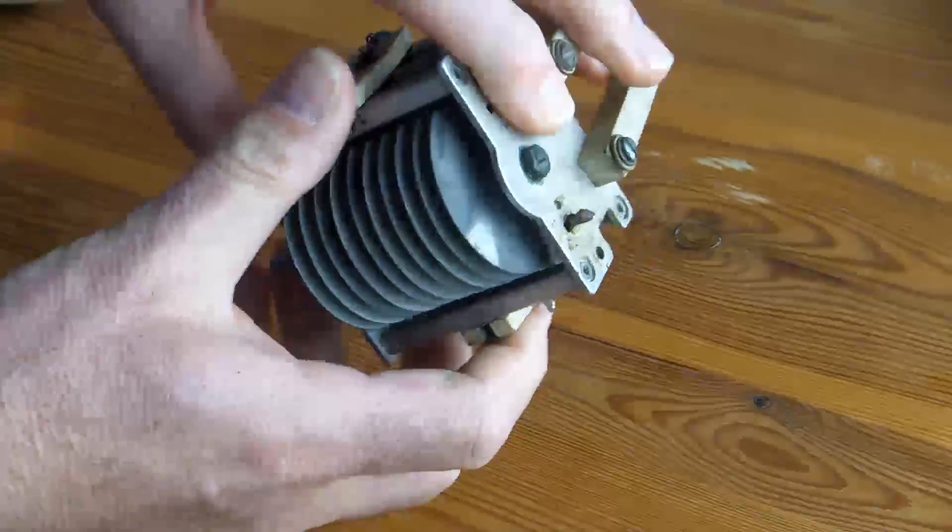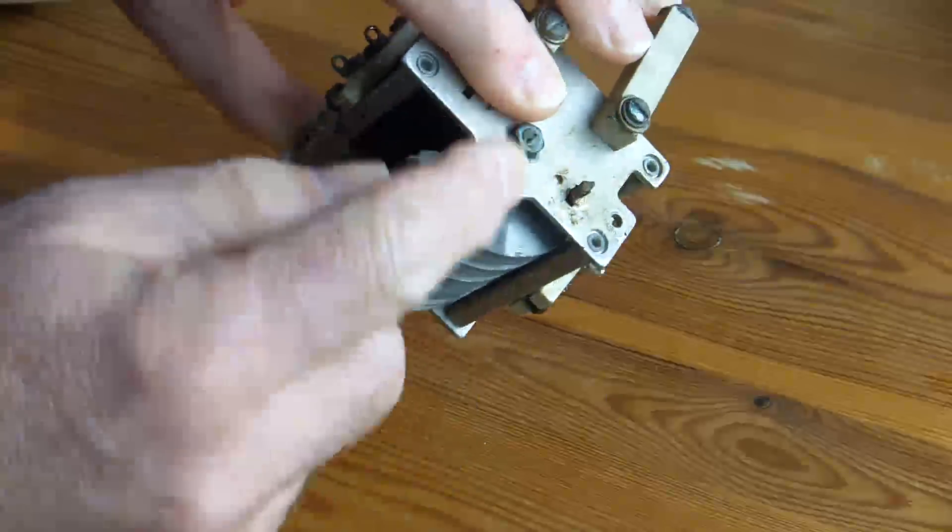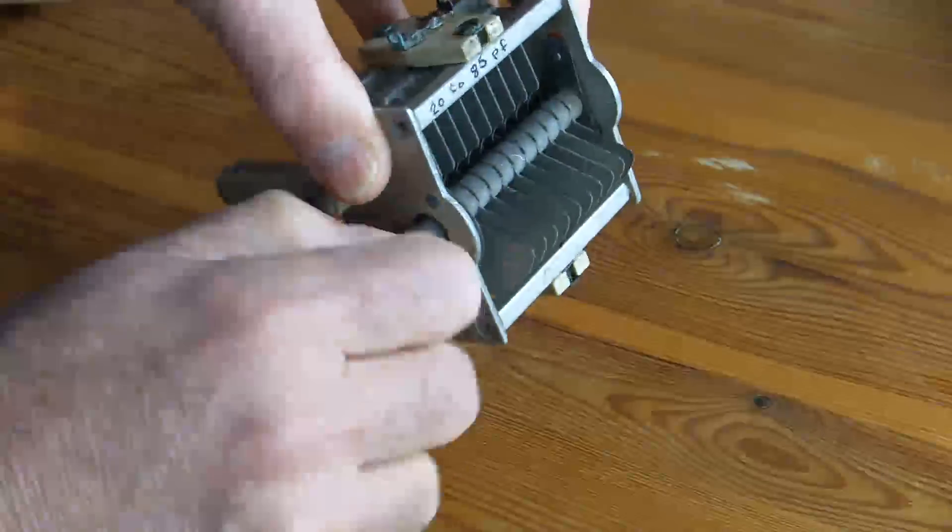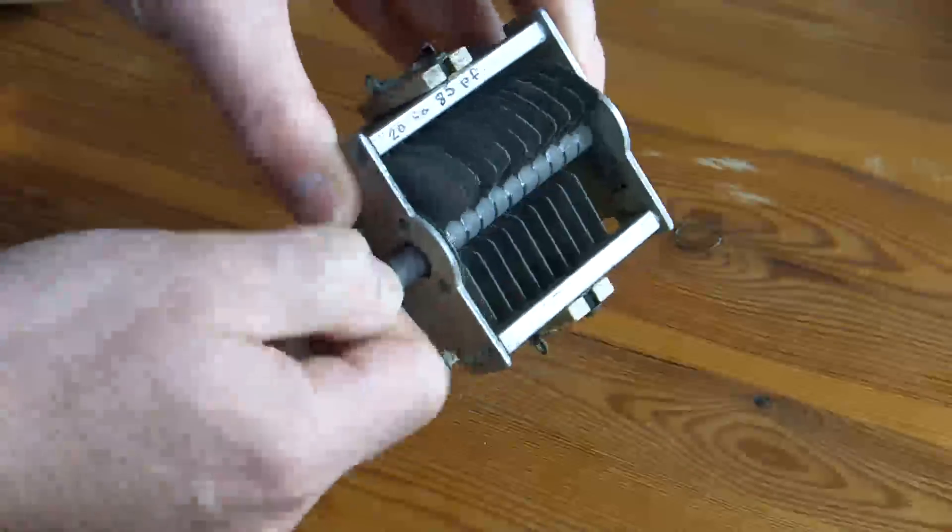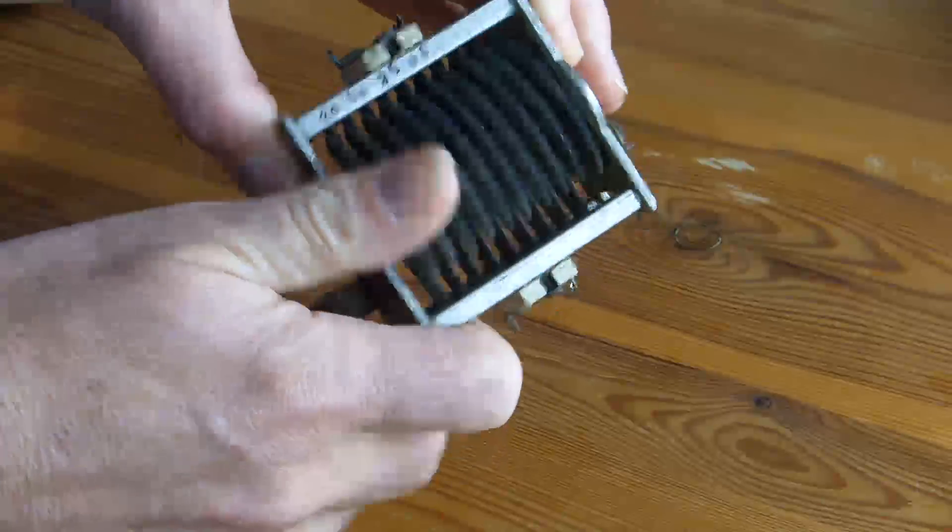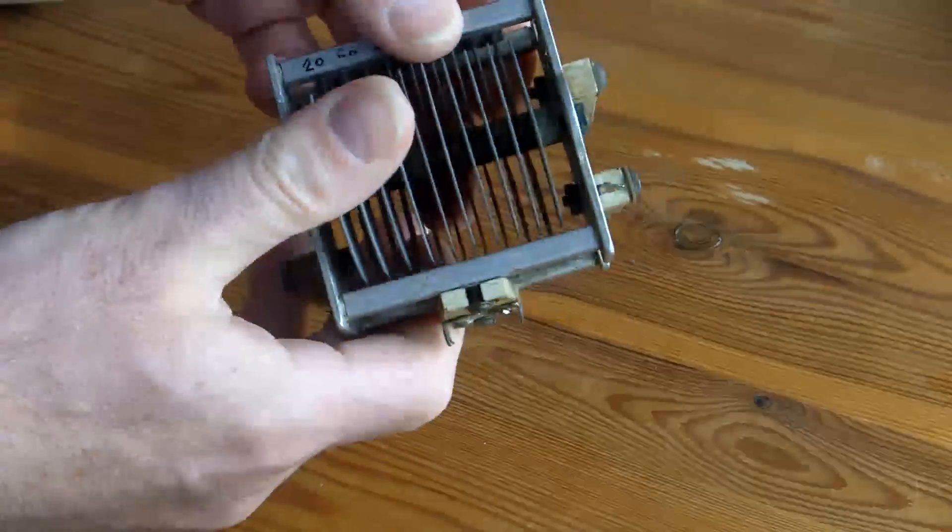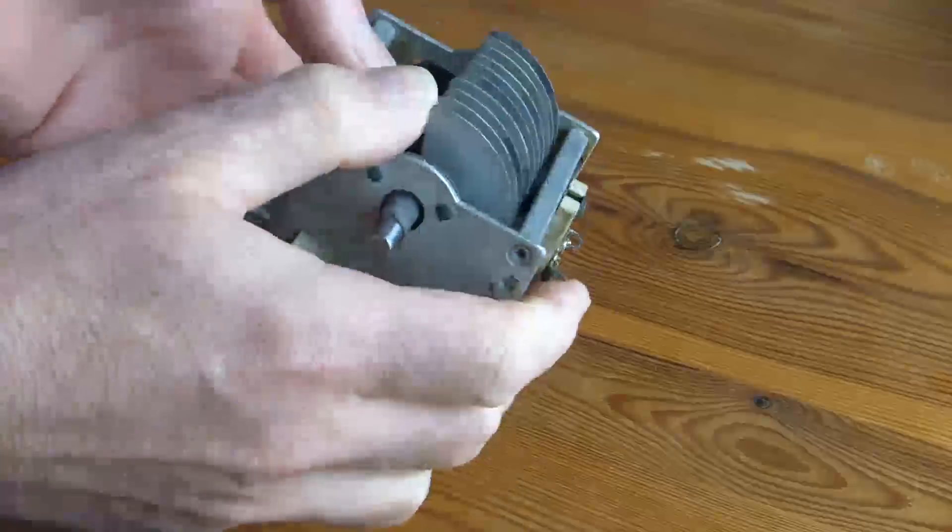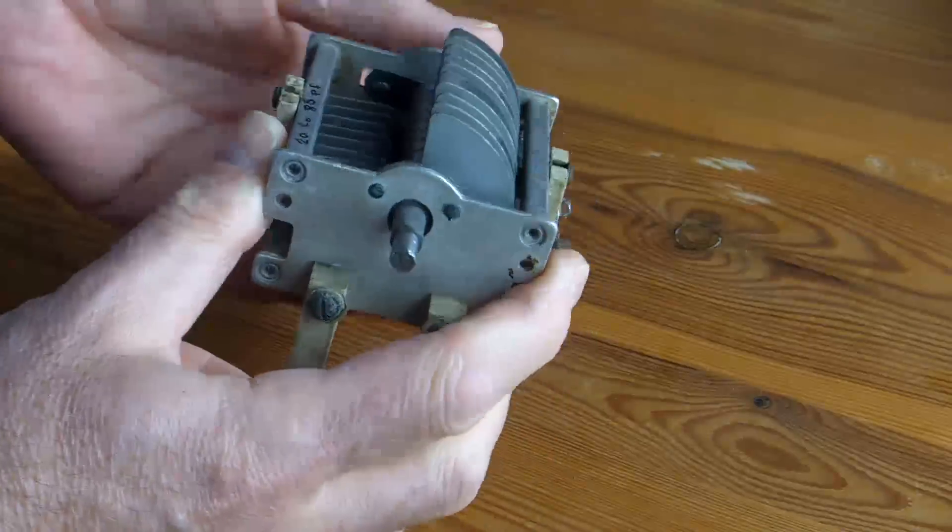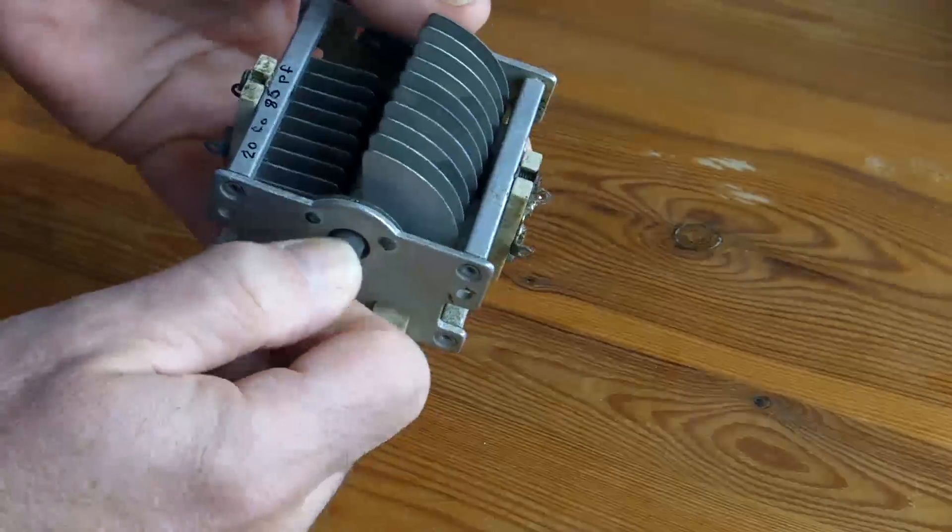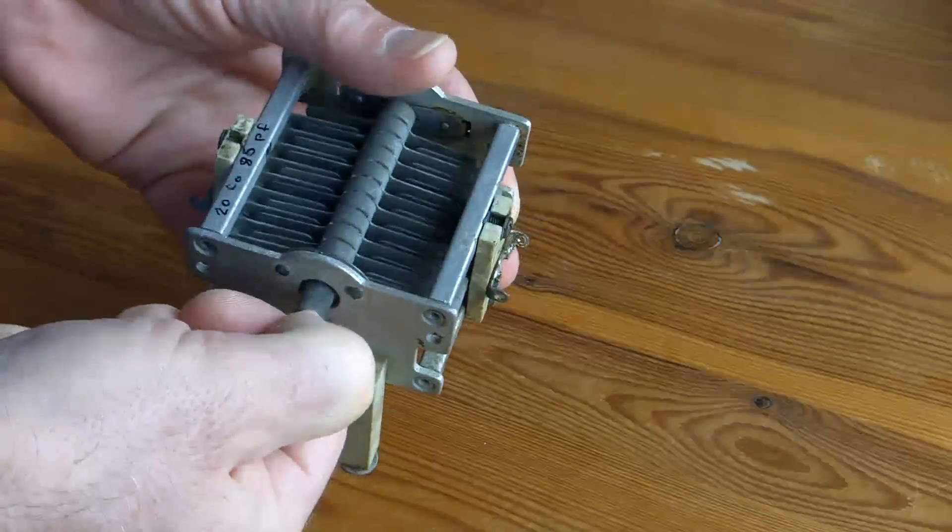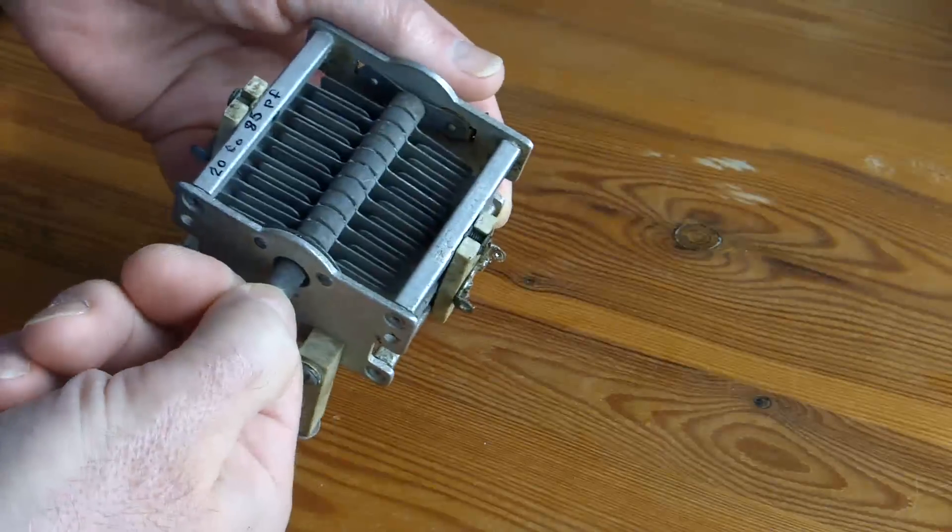That is, the vanes are mounted centrally about the shaft. So as we turn the shaft, the vanes move smoothly and evenly. So if we have it here, we can say that we've got half of the capacitance engaged. If we have it there, we've got all of the capacitance engaged.